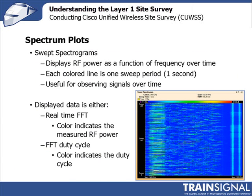The next spectrum plot is the sweep spectrogram. Unlike the previous plots that showed RF power across the band at a moment in time, the sweep spectrogram lets you observe change over a period of time. It's made up of tiny horizontal lines — each line is a measure of what was happening at that moment in time — building a picture of how spectrum is being used and fluctuating over time. Each line represents one RF sweep across the spectrum band.